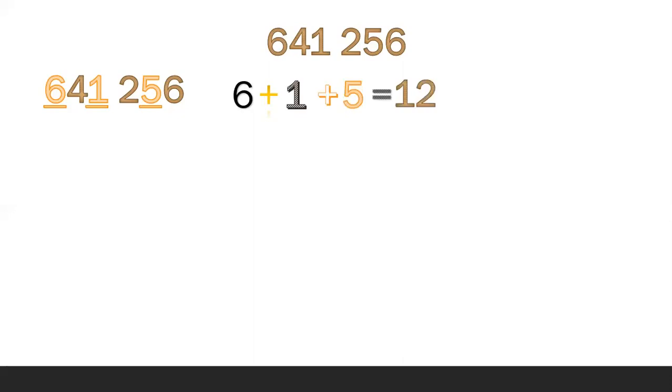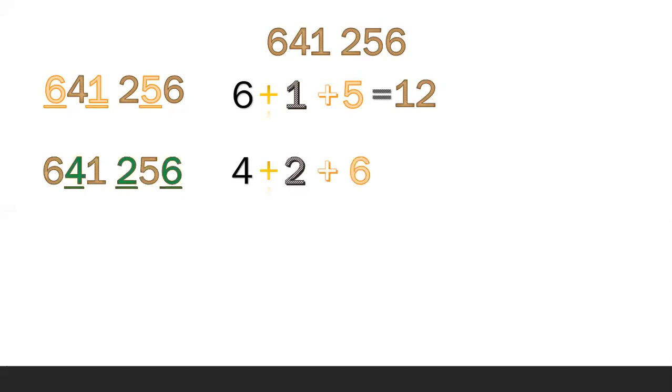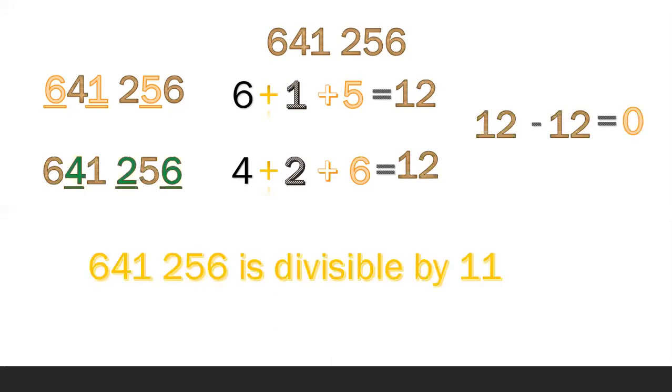Another example: 641,256. The digits in the odd places are 6, 1, and 5. Get the sum: 6 plus 1 plus 5 equals 12. The digits in the even places are 4, 2, and 6. Get the sum: 4 plus 2 plus 6 equals 12. Then subtract: 12 minus 12 equals 0. Therefore, 641,256 is divisible by 11.